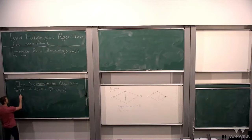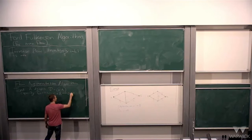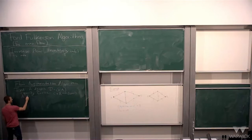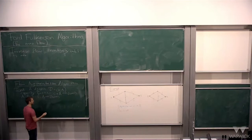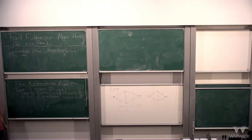We have a digraph D and a capacity function mapping every arc to a positive number. This is an algorithm for increasing an existing flow, so whenever you run it, you already have a flow F — from 0 to infinity — satisfying the conditions: it's a flow subject to C, meaning on every arc the flow is at most the capacity.